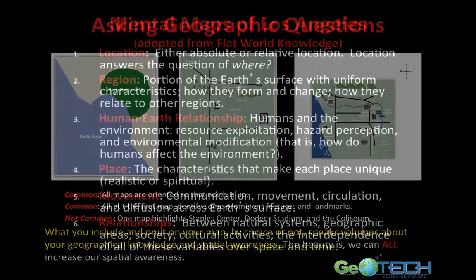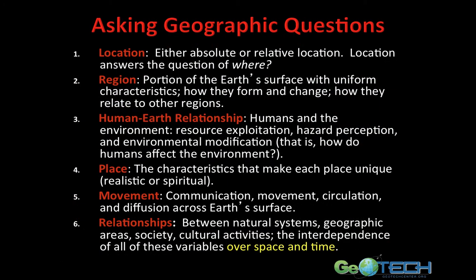So what are we really doing? We're asking geographic questions. The first is location — either absolute location or relative location — and it answers the question of where. We also look at region, which is the portion of the Earth's surface with uniform characteristics, and we can study how regions form and change over space and time, and how they relate to other regions.